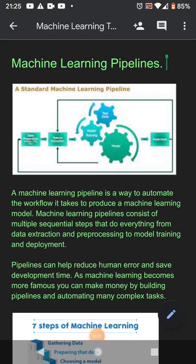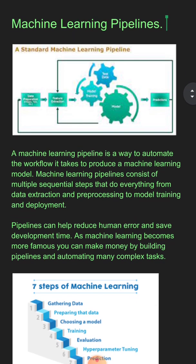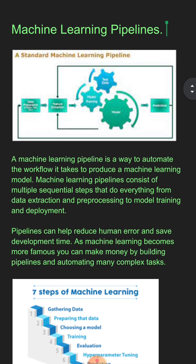Machine learning pipelines are ways to automate consecutive steps in your machine learning model. For example, you could automate the gathering, preparing, and choosing your model evaluations, etc.